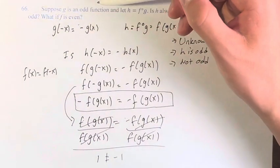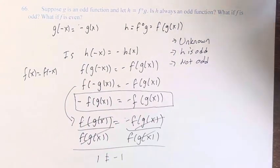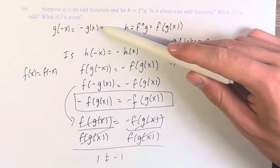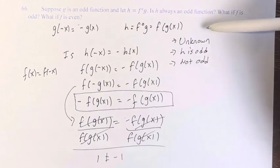So if g is an odd function and h is equal to f of g, h is an odd function if f is odd. It's not an odd function if f is even. And if we don't know whether f is odd or even, it is unknown.